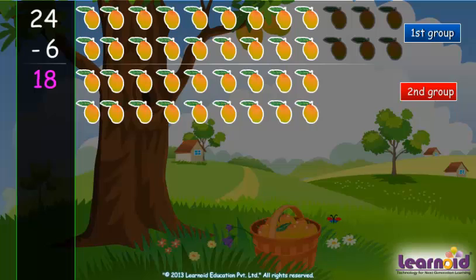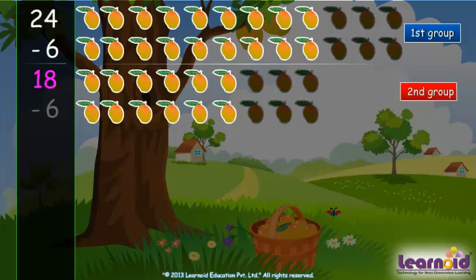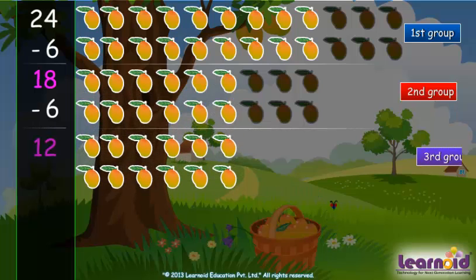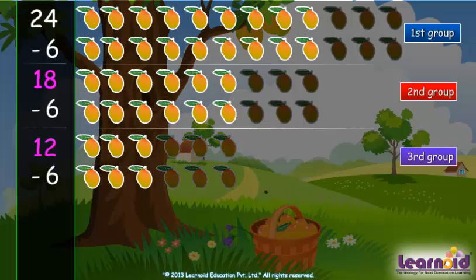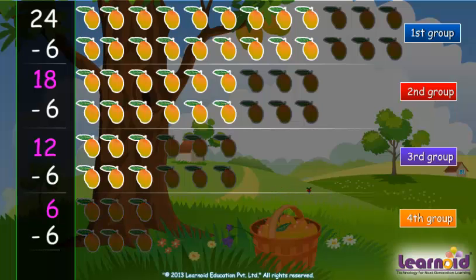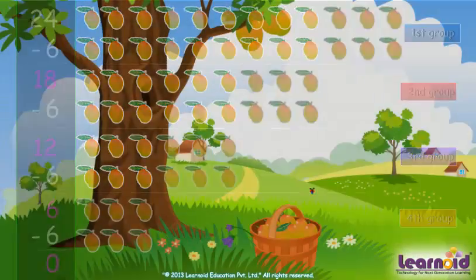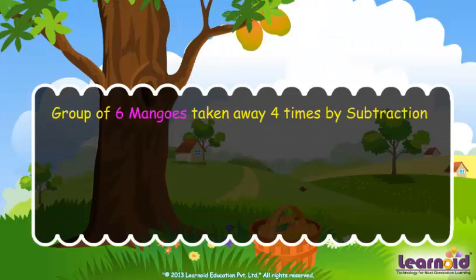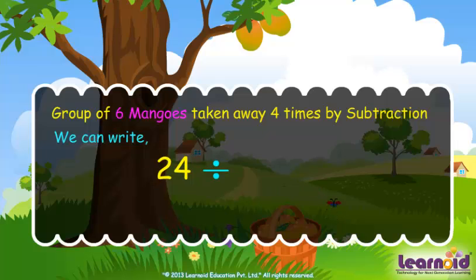Now 18 mangoes are left. Take away the next six mangoes. Now 12 mangoes are left. Take six more mangoes. Now six mangoes are left. When we take away the fourth group, we got zero. A group of six mangoes was taken away four times by subtraction.